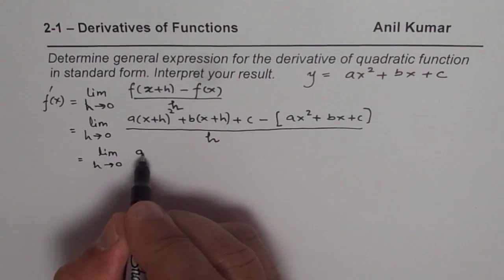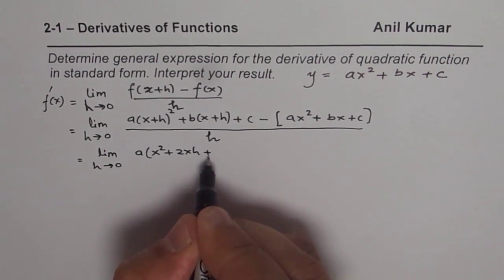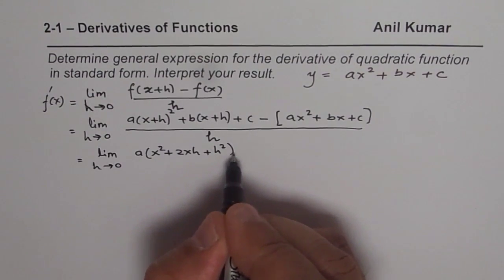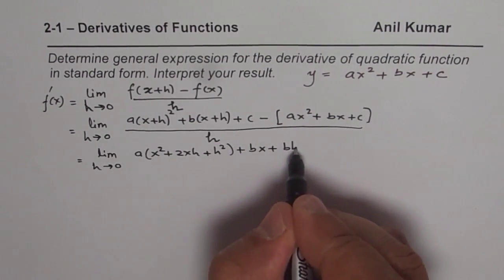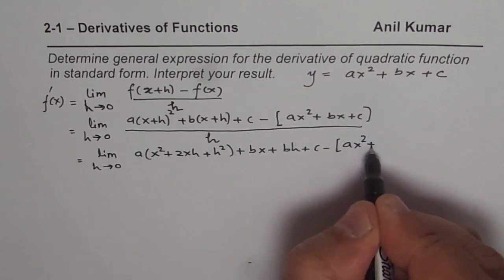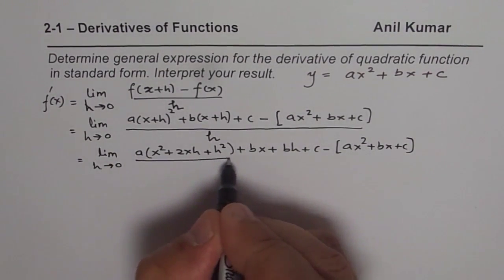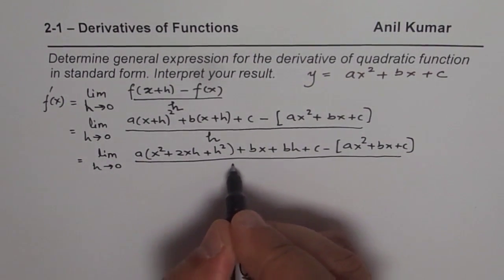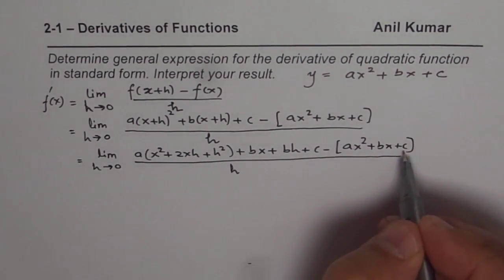Let's expand this. We have a times x square plus 2xh plus h square plus, we could write this as bx plus bh plus c minus we have ax square plus bx plus c. Everything divided by h. Now simplify this particular expression.